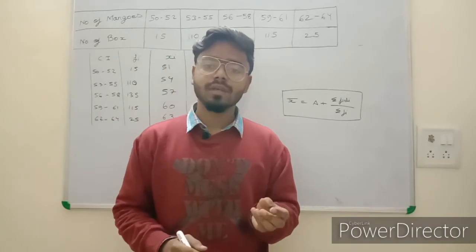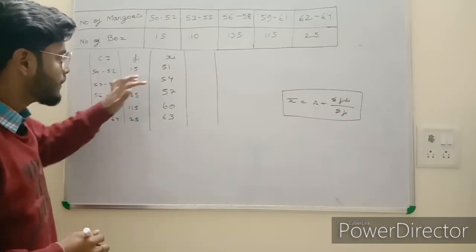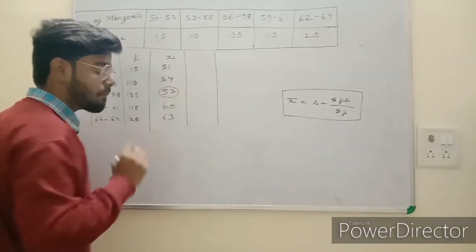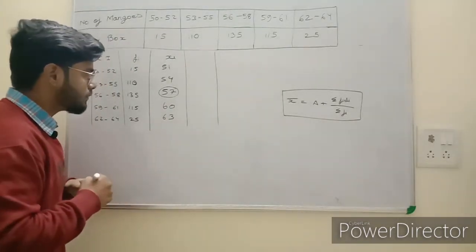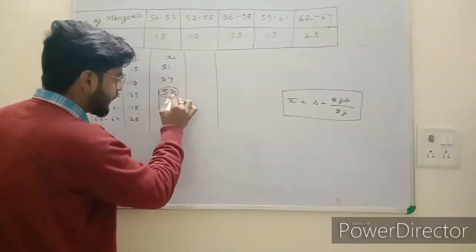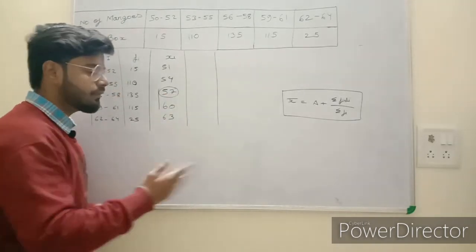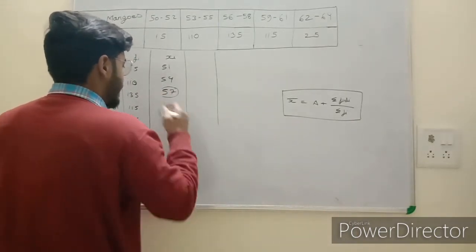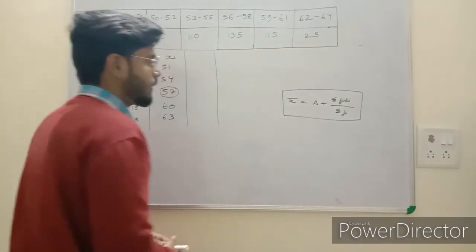We have five class intervals, so the middle one is 57 — we assume the mean is around 57. If there is an even number of class intervals, there will be two middle items; you can take either one, but I prefer the lower one. Here we have an odd number of class intervals, so it is straightforward.